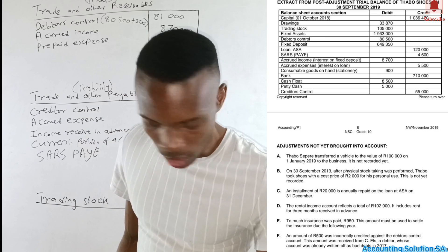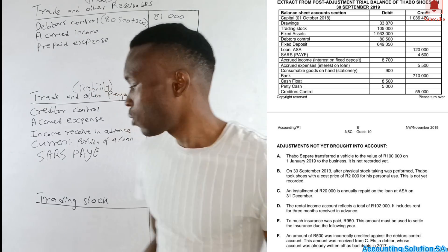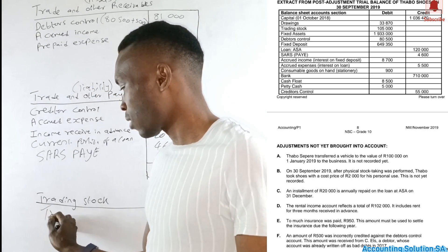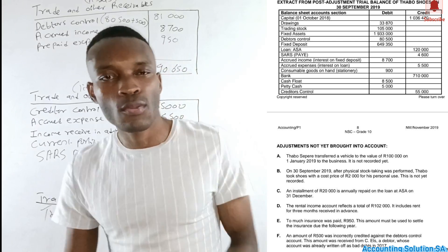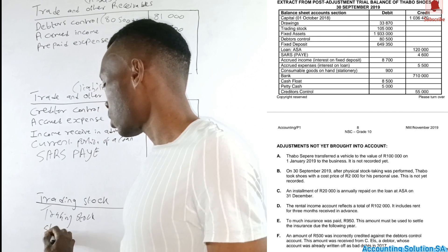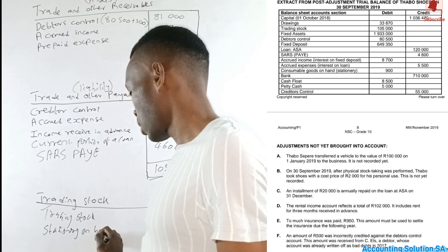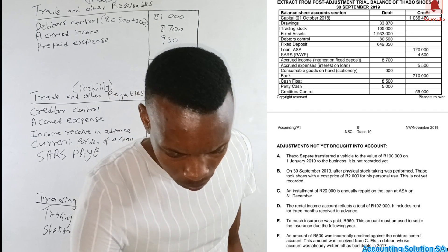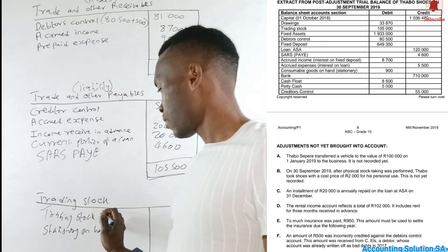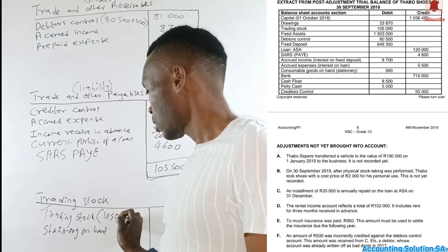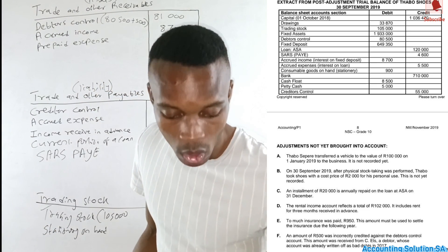The last note is trading stock, which is straightforward. We start with the trading stock balance from the trial balance, which is 105,000. We open a bracket and check additional information for any adjustments or closing stock figures to subtract.